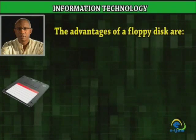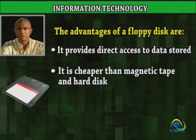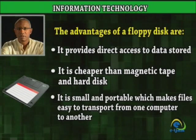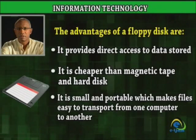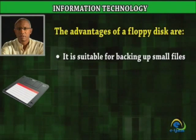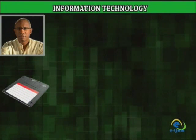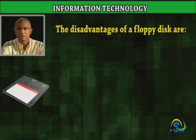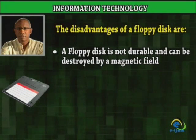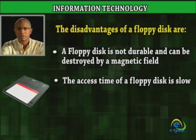The advantages of a floppy disk are: it provides direct access to data stored, it is cheaper than magnetic tape and hard disk, it is small and portable which makes files easy to transport from one computer to another, and it is suitable for backing up small files. The disadvantages of floppy disks are: floppy disks are not durable and can be destroyed by a magnetic field, the access time of a floppy disk is slow, and the storage capacity is limited.